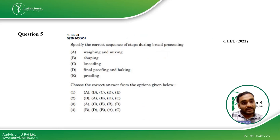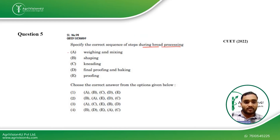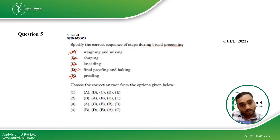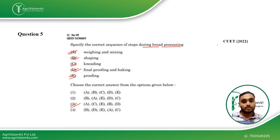Coming to the next question: specify the correct sequence of steps during bread processing. This is a straightforward question. First, we go with weighing and mixing. Then kneading, because we have to knead all the ingredients together. Then initial proofing, followed by shaping, then final proofing and baking. This is the ideal flowchart for the bread manufacturing process, making the third option the right answer. This question was also asked in CUET 2022.